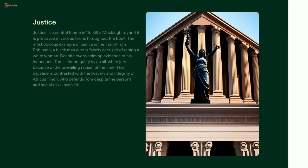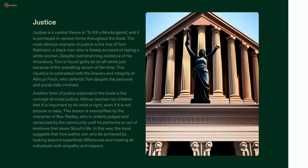Atticus Finch in To Kill a Mockingbird exemplifies the importance of justice as he defends Tom Robinson, a wrongly accused Black man. Atticus teaches his children to do what is right, no matter how unpopular or difficult, and this is demonstrated in the characters of Boo Radley and Sheriff Tate, who make sacrifices to ensure justice is done. The story serves as a powerful reminder of justice in the face of prejudice and bigotry.